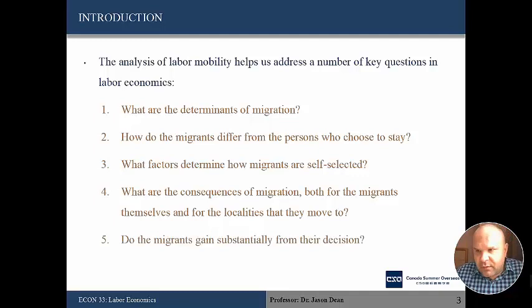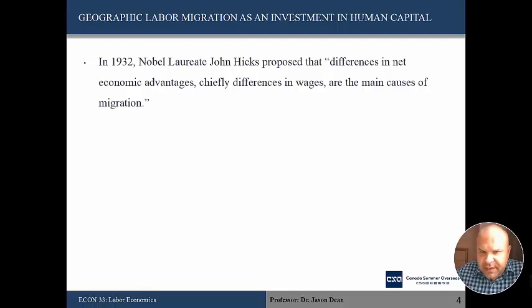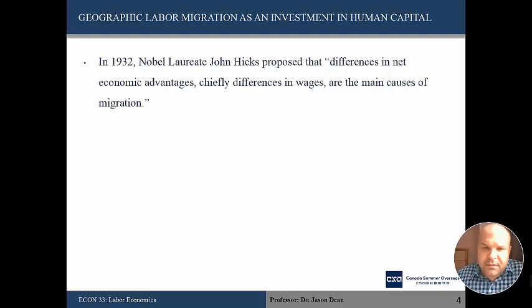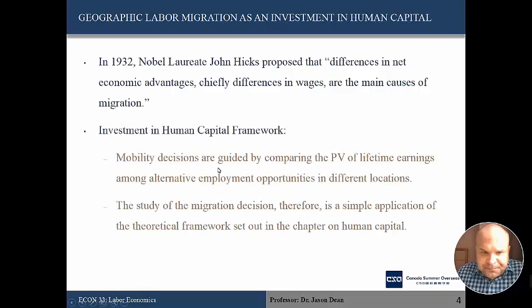In 1932, Nobel laureate John Hicks proposed that differences in net economic advantages — chiefly differences in wages — are the main causes of migration. That makes intuitive sense; one of the most important reasons for people to move would be to better their economic situation, although there are other reasons. We're going to use the human capital framework from Chapter 6, and the decision to move will be guided by comparing the present value of lifetime earnings between different potential opportunities.